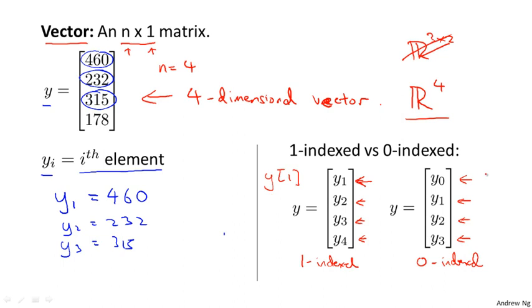There's a kind of C++ notation, I guess. And sometimes it's zero, zero index, depending on what programming language you use. So it turns out that in most of math, the one index version is more common.